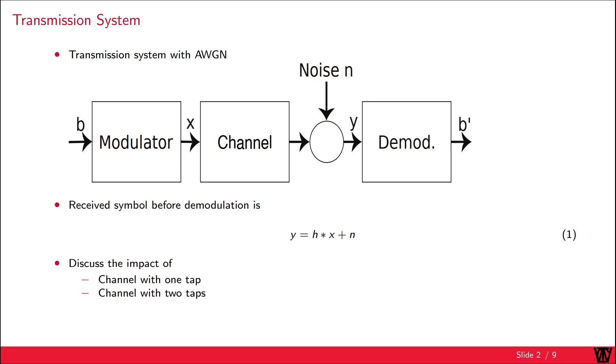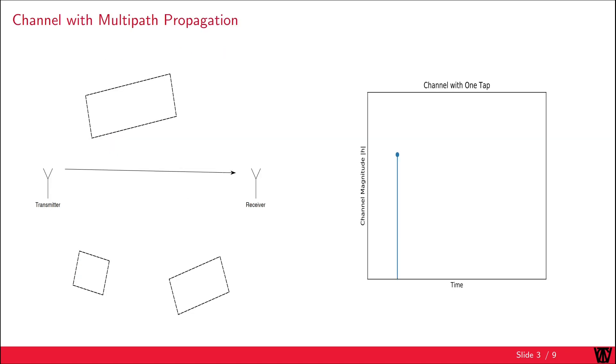We want to discuss two different scenarios: the case of a 1 and a 2 tap channel. Now let's have a look what the different amount of taps mean in a wireless communication system. Let us transmit data from the transmitter to the receiver. In the simplest case there would only be the direct path and therefore we have a channel with an impulse response with one tap.